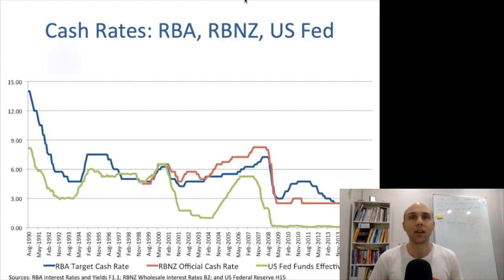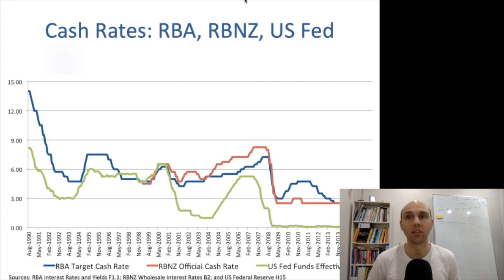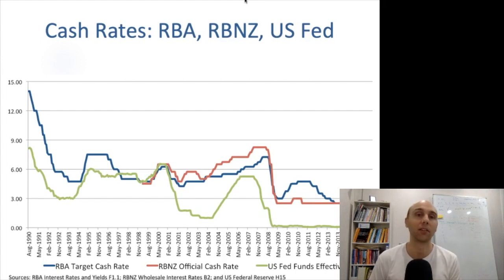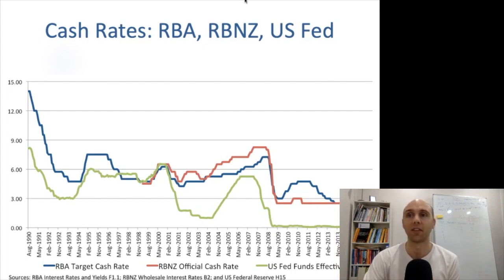Cash rates from different central banks generally follow each other reasonably closely. For example, the RBA, the central bank of New Zealand, and the Fed in the US track each other. The US tracked Australia's rate pretty closely up until about 2001 where it started to drop, and ever since the global financial crisis — spurred on by the subprime mortgage crisis — the US effective rate has dropped to around zero, although it's starting to pick up.